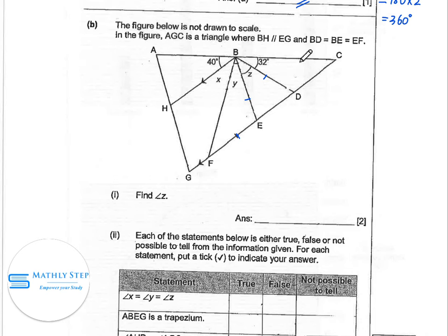We look at here. Because BH and GC, they are parallel to each other and this angle is 40 degrees, this should be 40 degrees as well. Now we can find out angle BDE equal to 40 plus 32 equal to 72.